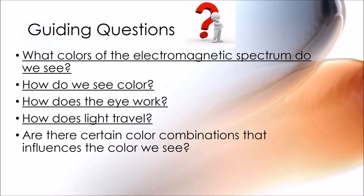How does light travel? And what color combinations allow us to see colors like yellow, red, and green?